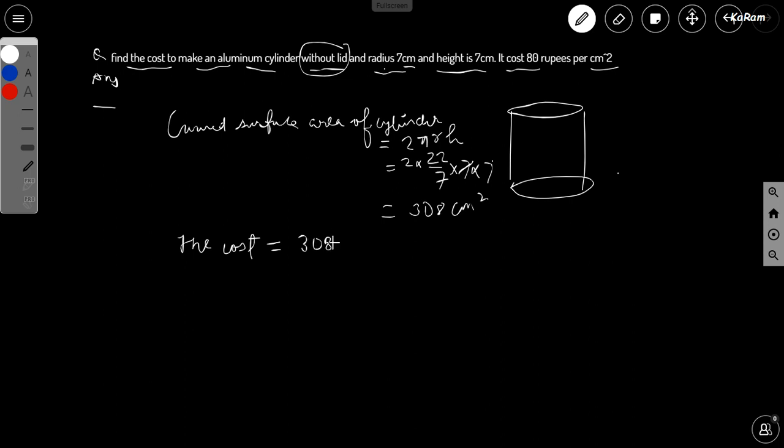308 multiply 80. Since the cost per centimeter square is 80, the cost of 308 centimeter square will be just multiply. We just need to multiply 80 with the curved surface area so we'll get...